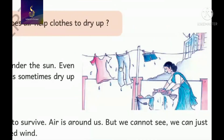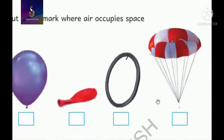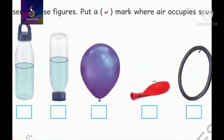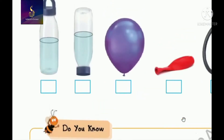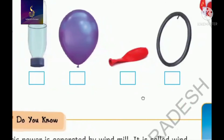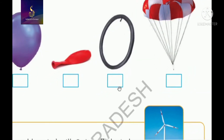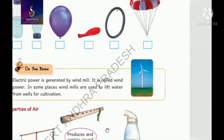Air is surrounding us. Remember the various types of air that occupy places - breeze, strong wind, and cyclones. Look at the pictures and put a tick mark in your textbooks where air occupies space in these pictures.